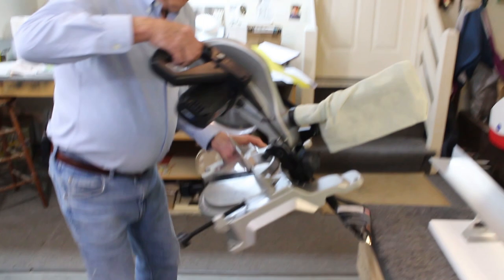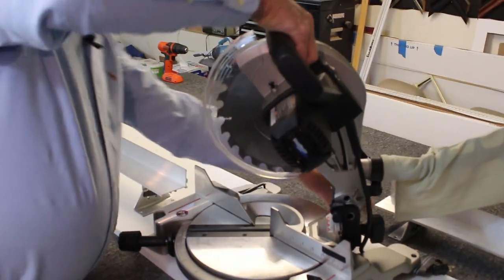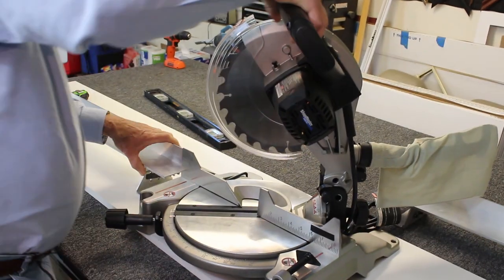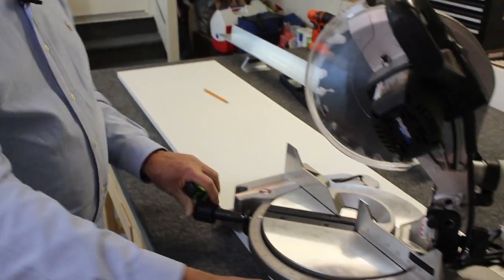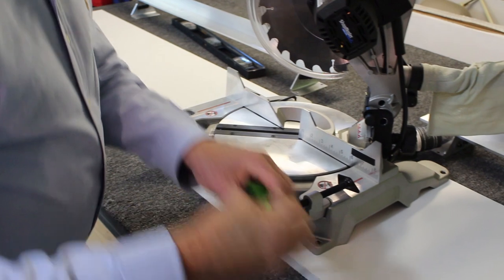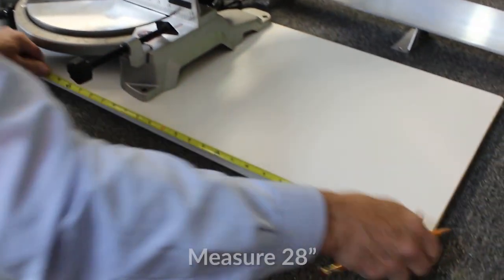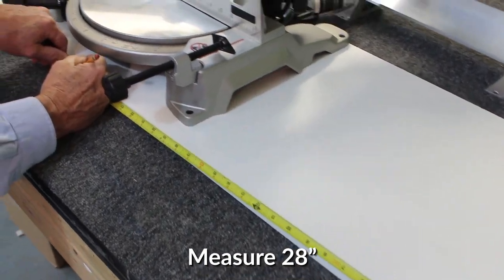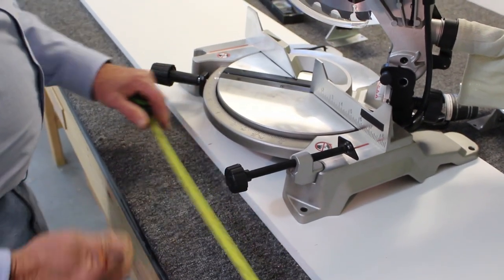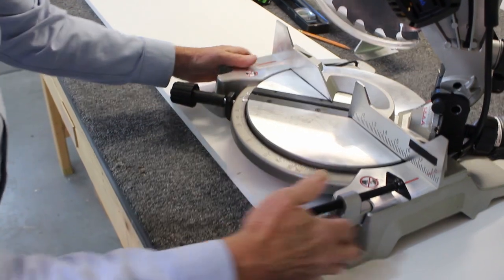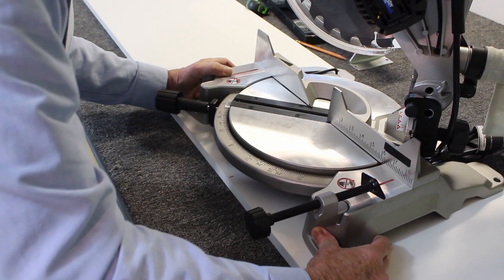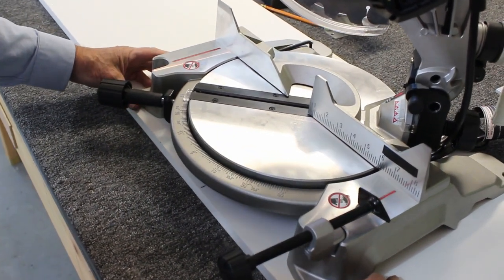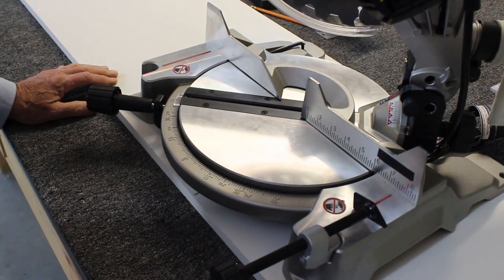Now grab your miter saw and set it up on this board. Doesn't matter where you set it to start with, we'll figure that out in a moment. Take a tape measure and measure from the right hand side 28 inches. Put a mark at it. Now this will be roughly the center of the saw. Set the saw as close to that as you can visually. If you're off an inch it won't matter.